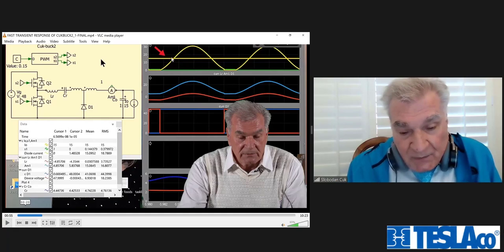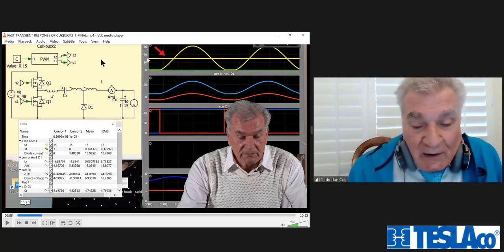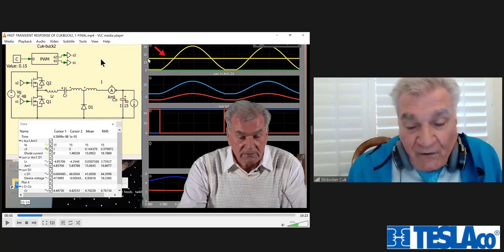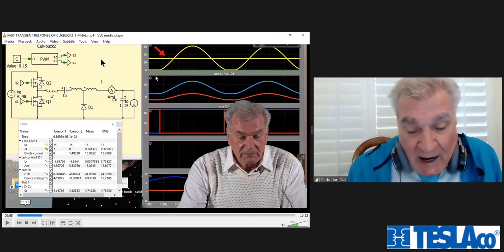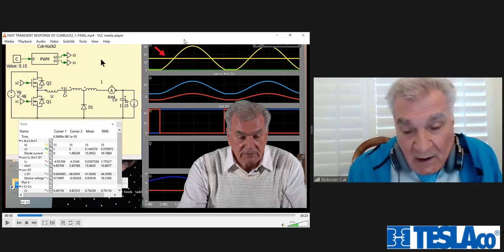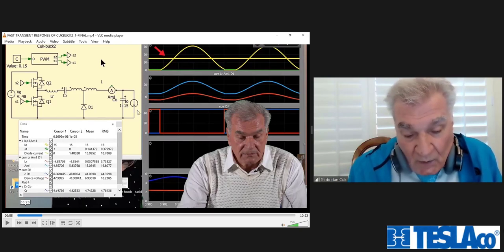Then the point is that this diode is now sinusoidal current. It's sinusoidal current, which has an average of 15 amps. But time domain, actual time domain in this diode current is a 30 amp peak to peak, but 15 amps is a current in the load.